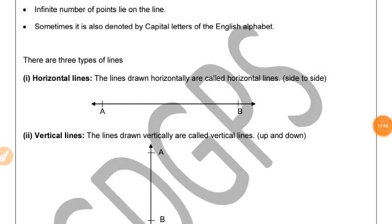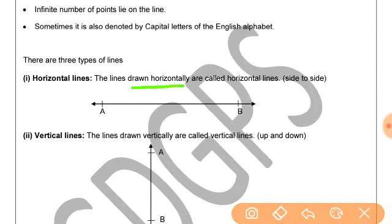There are three types of lines: horizontal lines, vertical lines, and slanting or oblique lines. Horizontal lines are the lines that are drawn horizontally, that is from side to side, left to right or right to left.